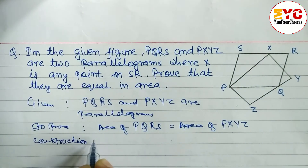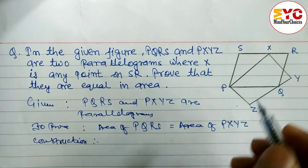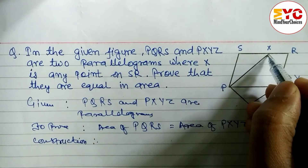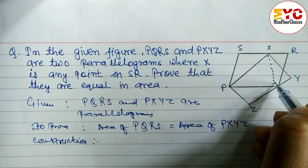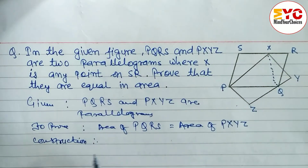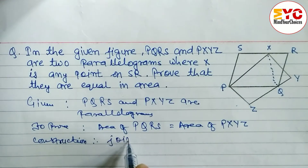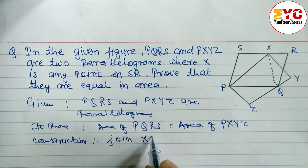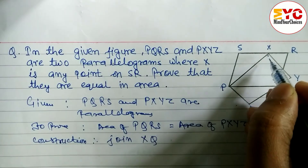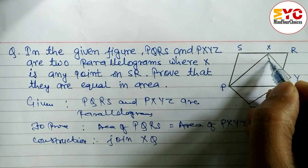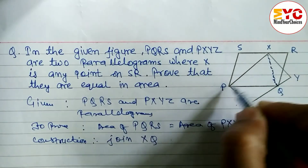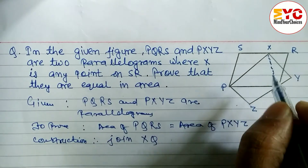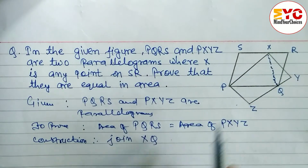For construction, we draw one line — join X and Q. Join XQ. Draw this line straight to form a triangle.